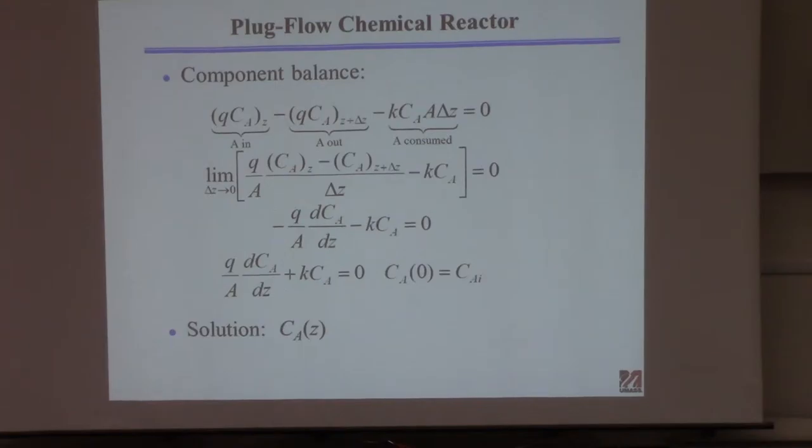So if you had x at z plus delta z minus x at z, divide by delta z, take the limit goes to 0, that'd be the derivative of x with respect to z. So x is cA here.